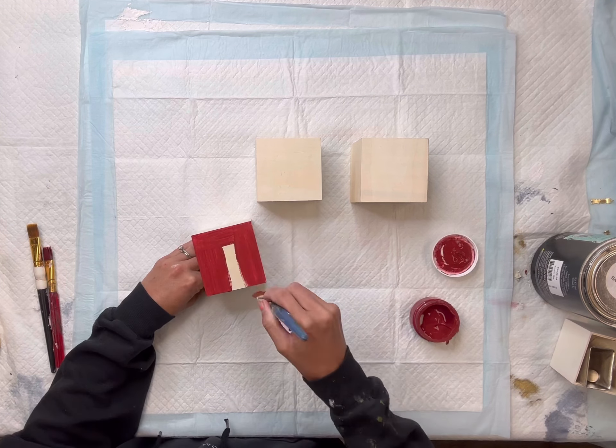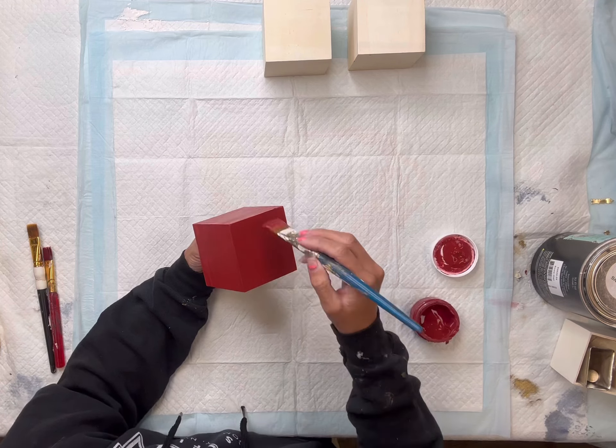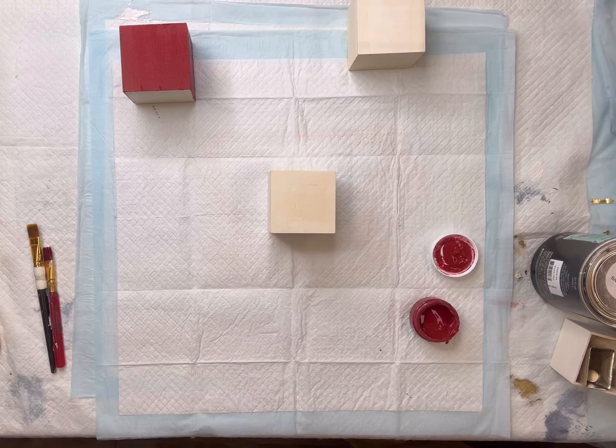I have these three cubes. I got them from the Dollar Tree. They actually had a little drawer on the inside that I removed, so you just want to make sure that the opening is on the back.